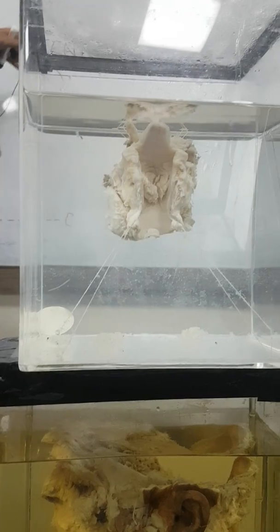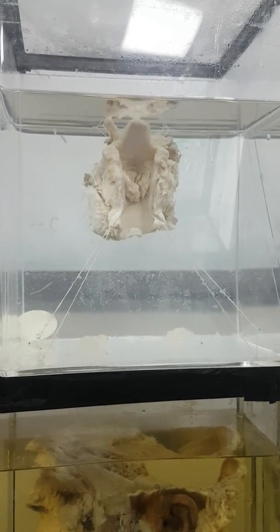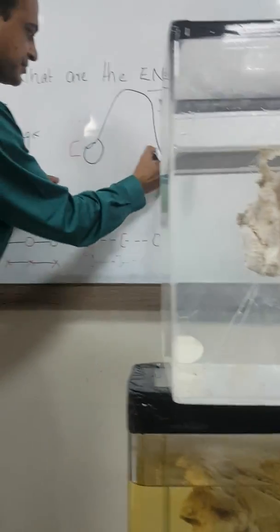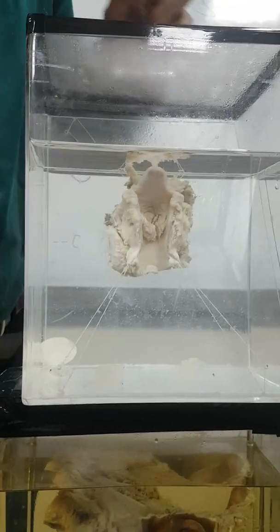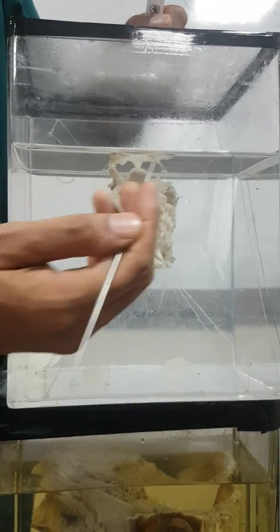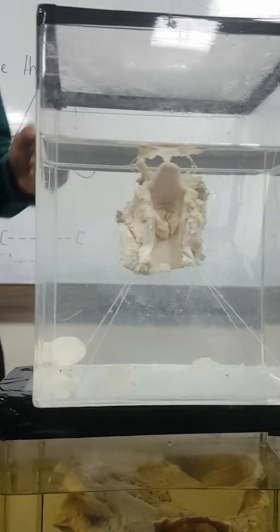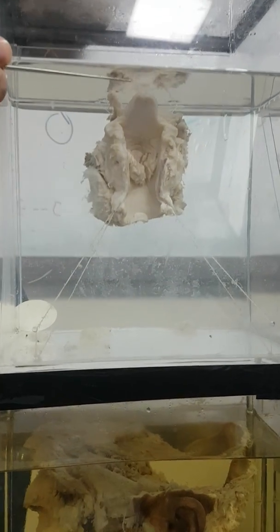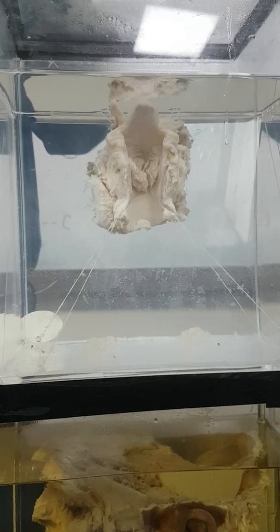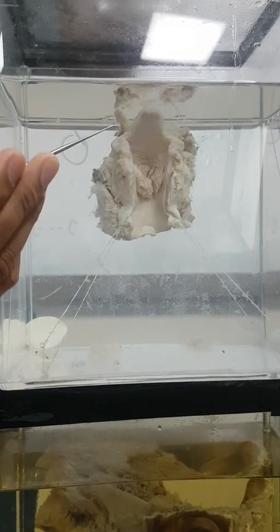The most prominent structure you are seeing here is the epiglottis. Where the epiglottis ends, you can see two prominent structures - those are the arytenoids. So epiglottis, then the arytenoids. This is the larynx which was closed and has been cut open, so we are seeing the epiglottis and the arytenoids.